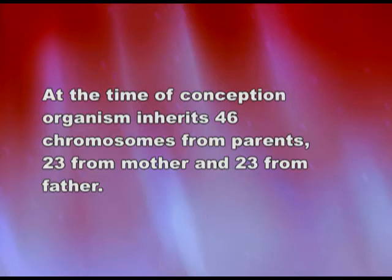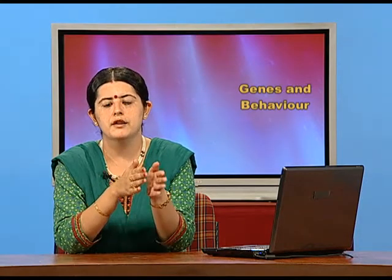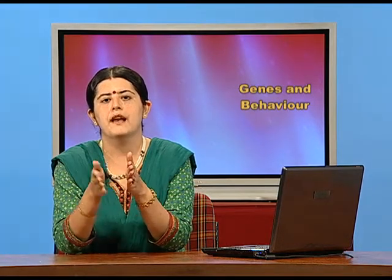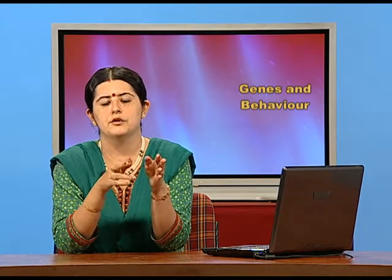At the time of conception, 46 chromosomes are inherited — 23 from the mother and 23 from the father. There is a common misconception that when a girl is born, something is wrong with the female. But biologically, it is the father's contribution to the genetic setup that determines gender. The mother contributes the X chromosome, while the father contributes either X or Y.